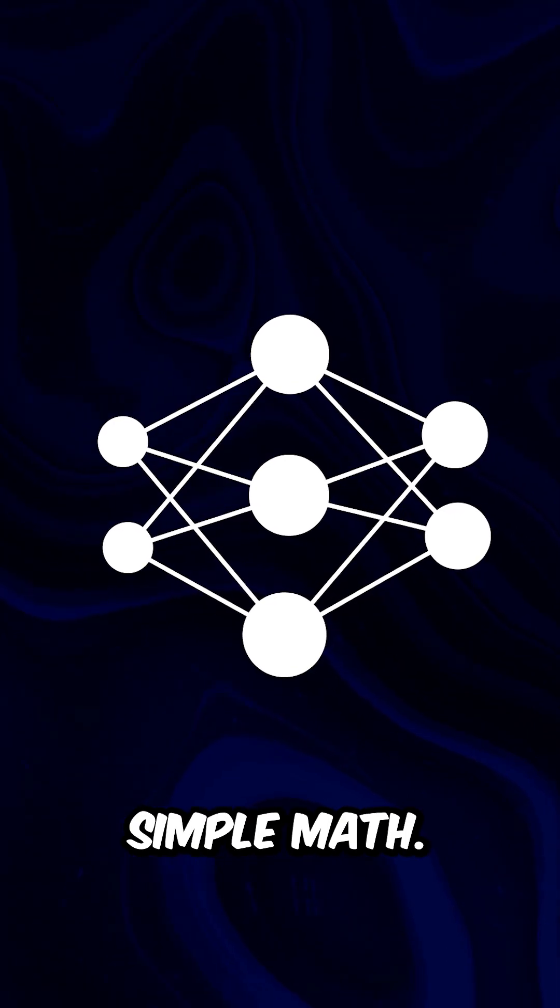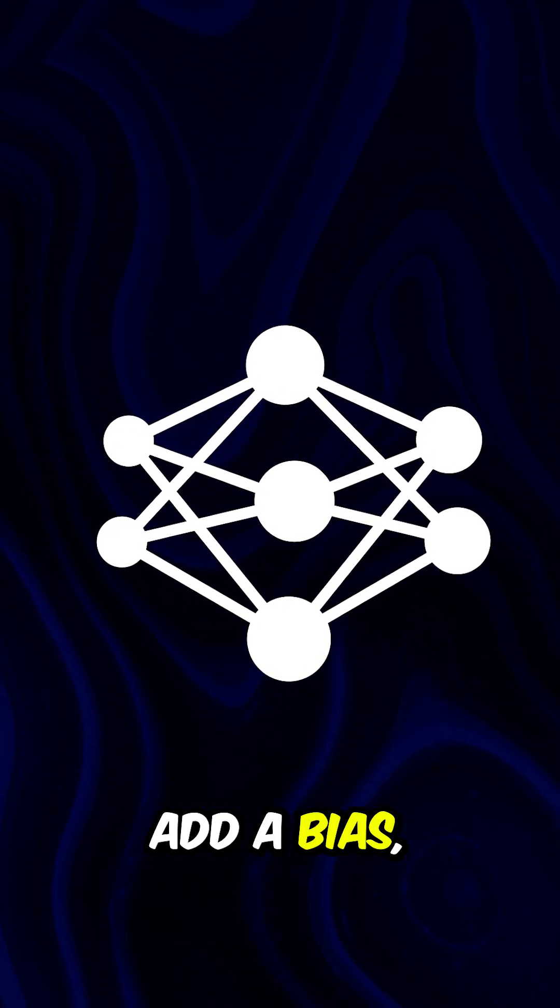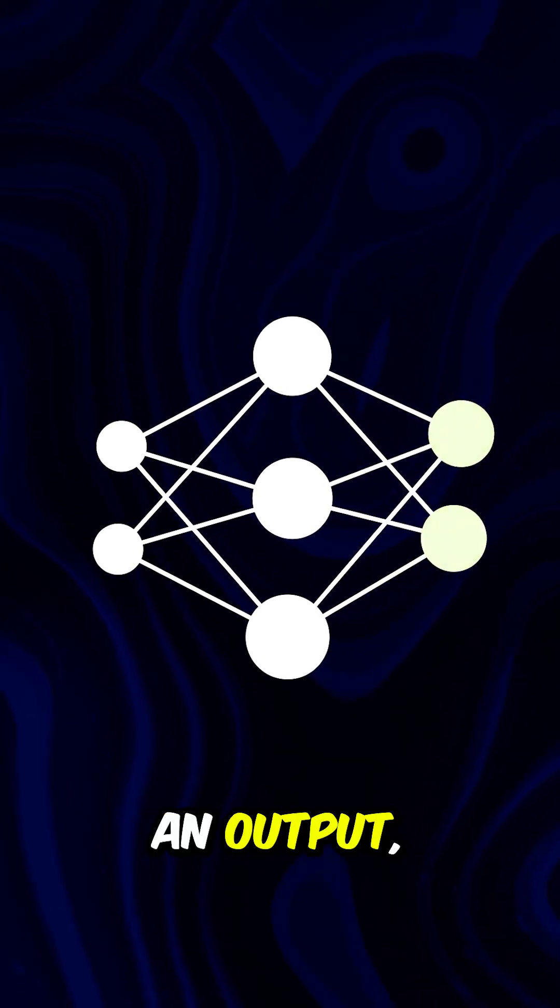Each neural network does simple math. Take inputs, multiply by weights, add a bias, pass it through an activation function, provide an output, and repeat.